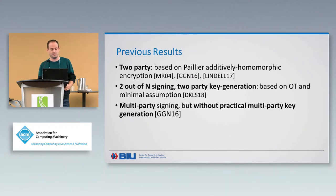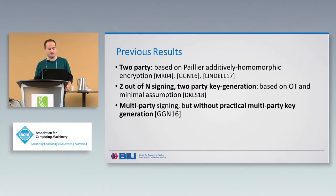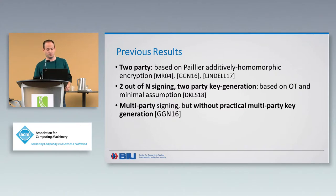What has been done in this area prior to our work? In the two-party setting, there has been a lot of progress — there are actually very nice solutions. Most of them are based on Pallier, with one exception: the work of Dohner et al. earlier this year, which based their construction solely on oblivious transfer. Their signing algorithm is also for two-out-of-n, not only two-out-of-two.